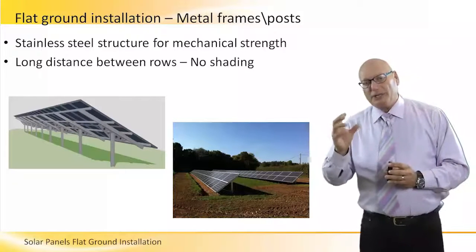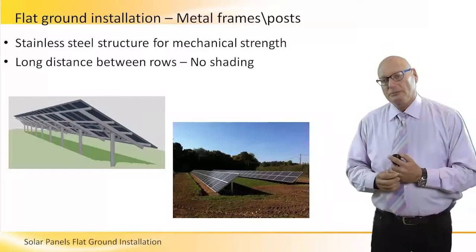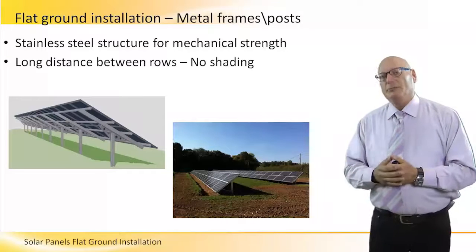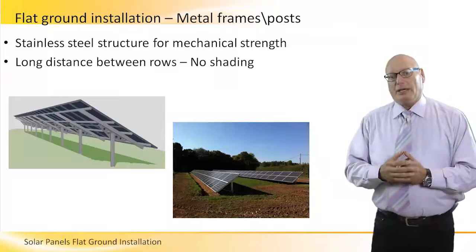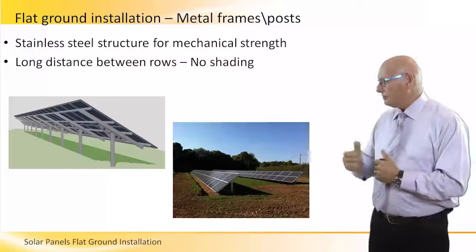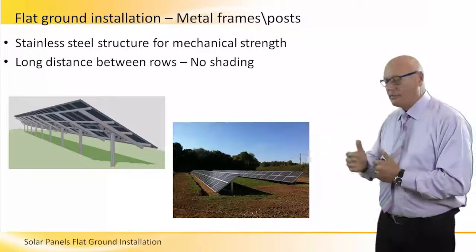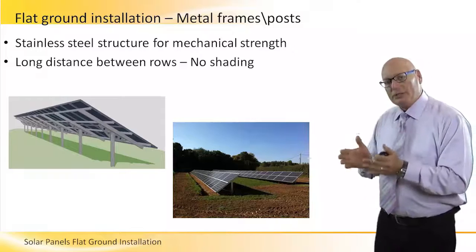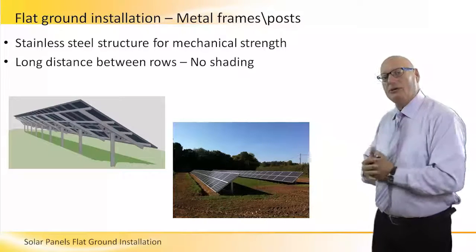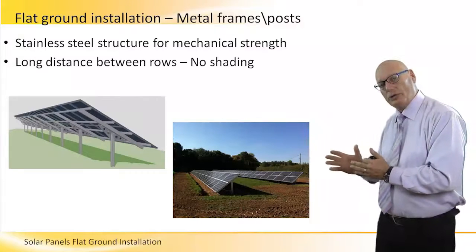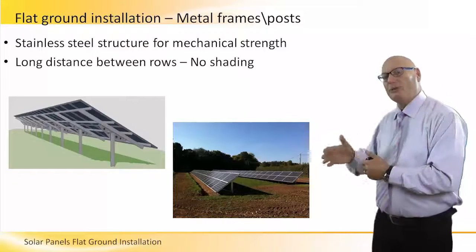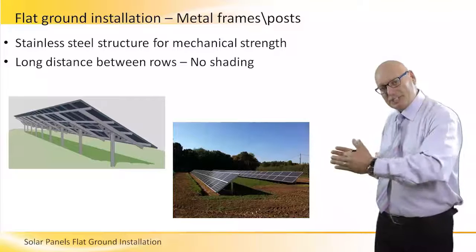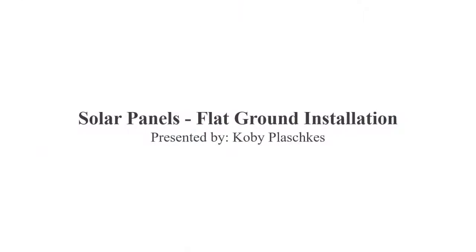To continue with another aspect of flat ground installation: stainless steel structure, not only for mechanical strength but because it will be outside for 30 years. There must be a long distance between rows. Look at the space between the front row and the back row and the shadow the front row casts. We must ensure that shadow does not hit the back row, because if it does, it will dramatically reduce the output power of the back row. So there must be adequate space between the rows and between the ground and the panels.